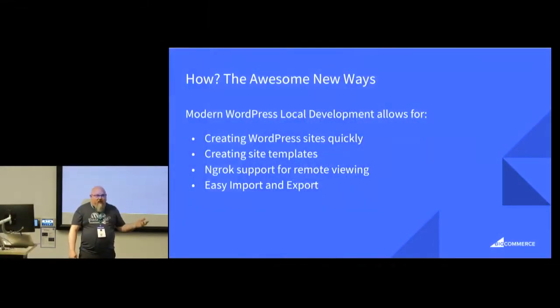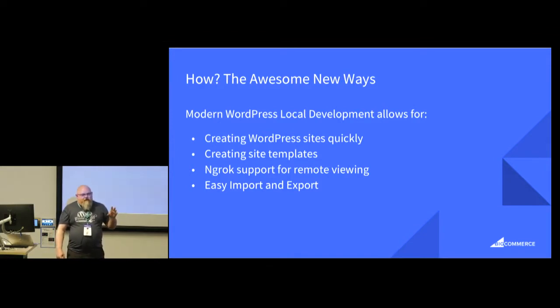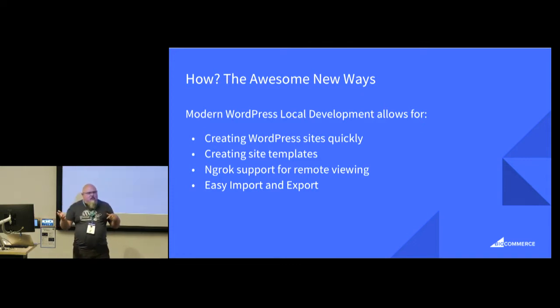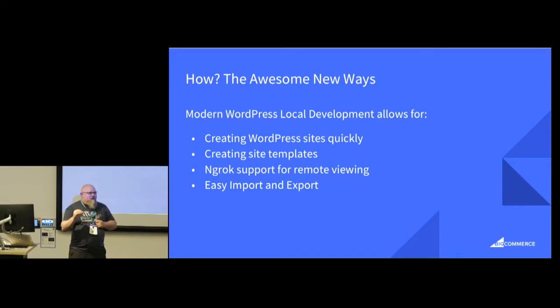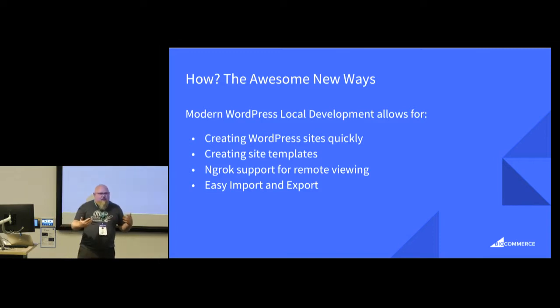The awesome new ways extend the old ways. One of them uses Docker, the other uses XAMPP. They're still using the old ways, but they've extended it to allow for things like creating site templates — they call them blueprints. So you install WordPress, install your favorite plugins, get everything configured, and save that. The next time you start a project, you start there, which might save you half an hour of configuring WordPress and installing plugins every time.